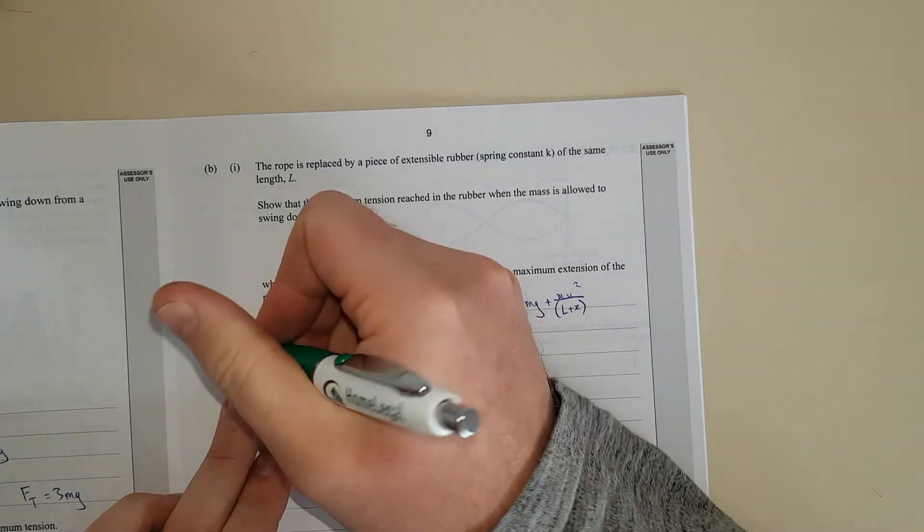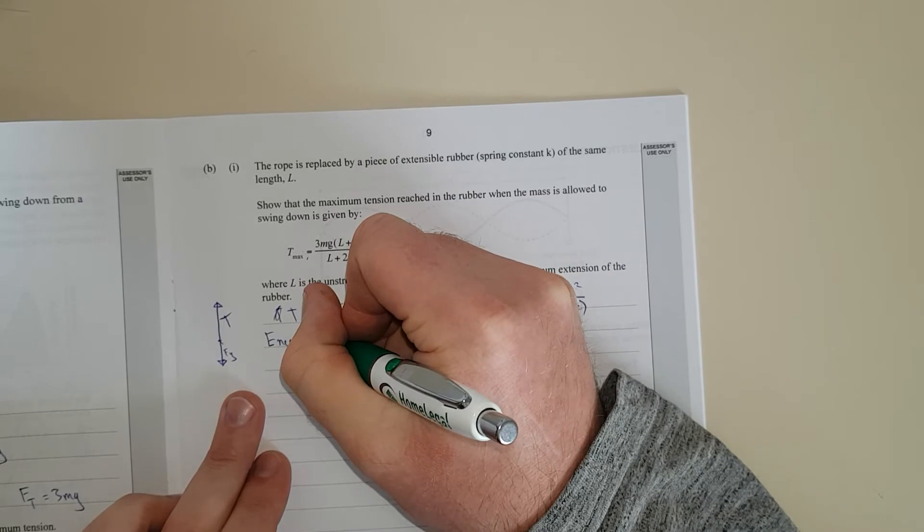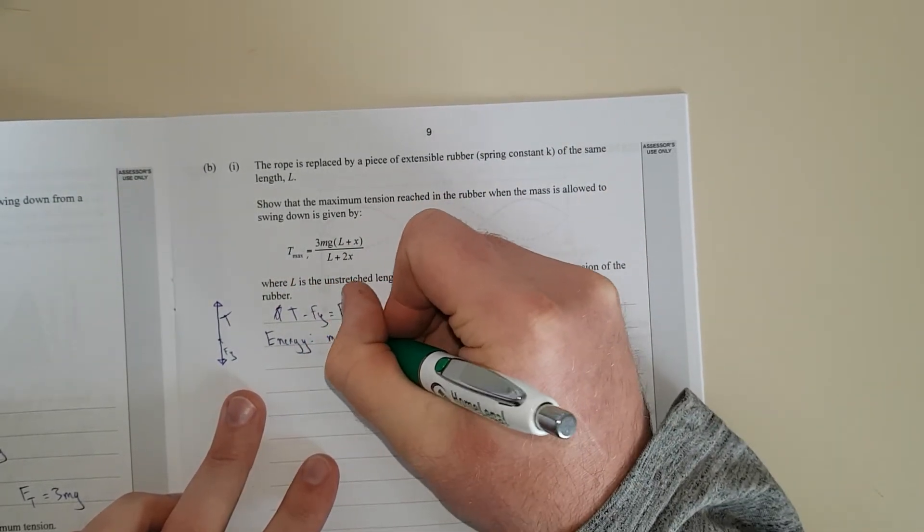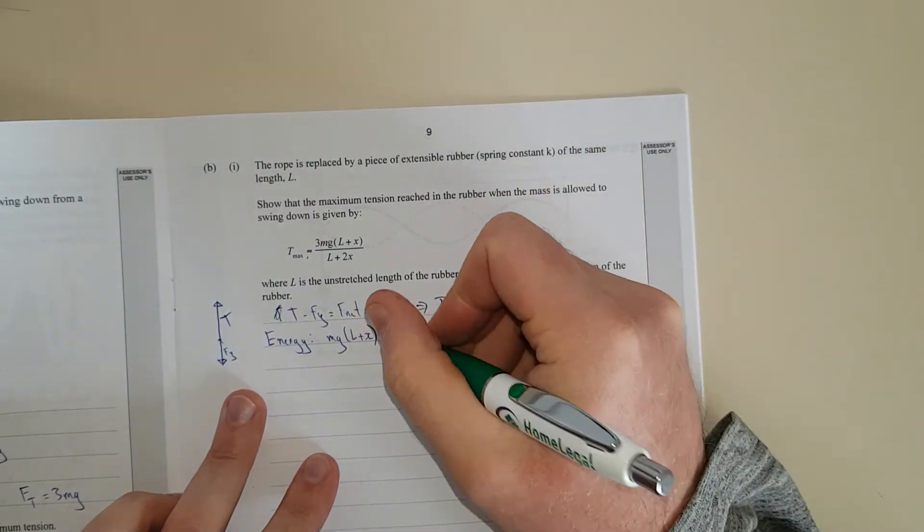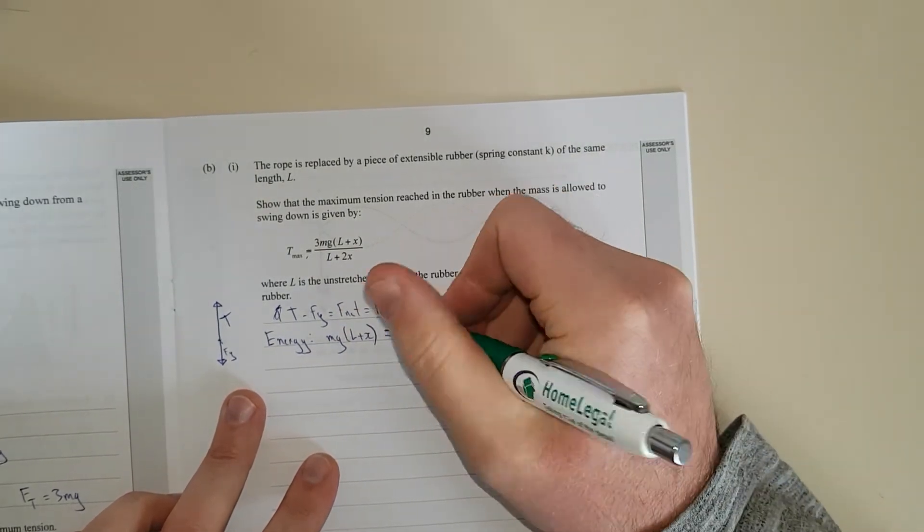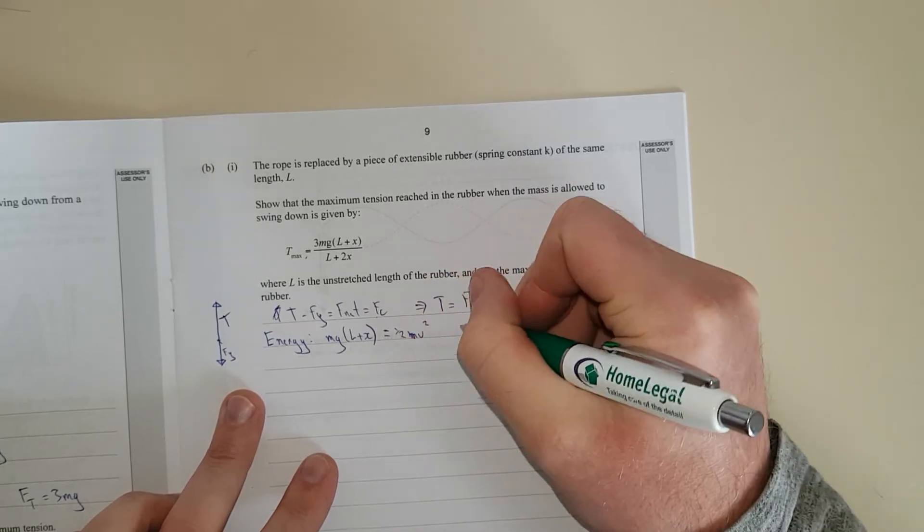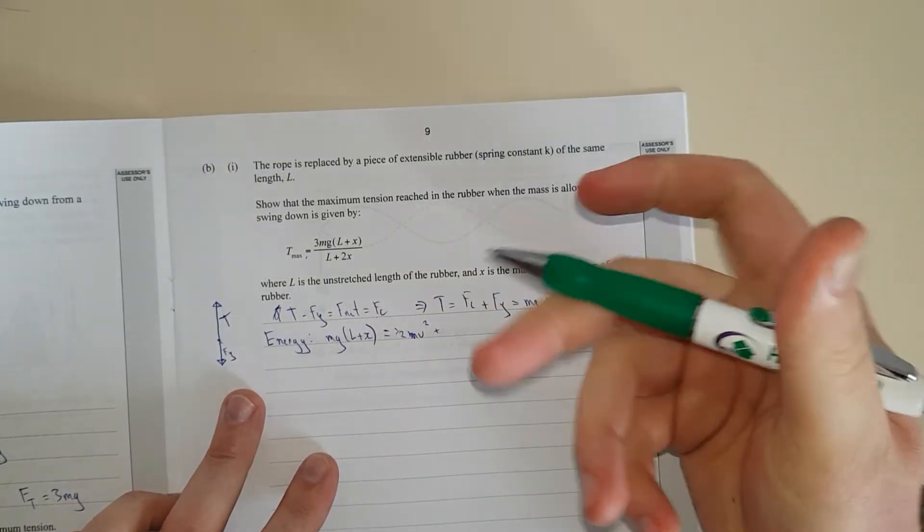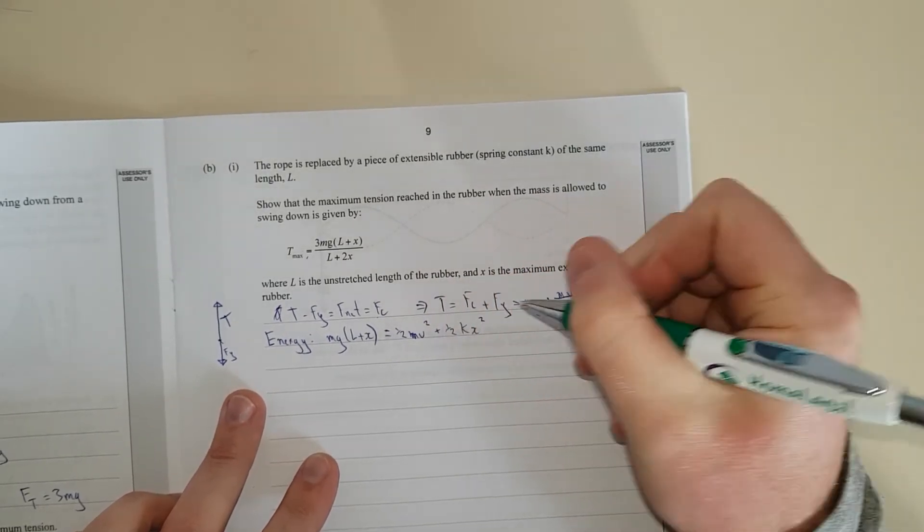So this is the force consideration, and the other consideration we need to take into fact is energy. We're going to have MgH, but H is going to be L plus X because we've gone down a little bit extra. And that's going to be equal to half mv squared plus, and now the spring has got a little bit of energy as well because it's stretched, half KX squared.